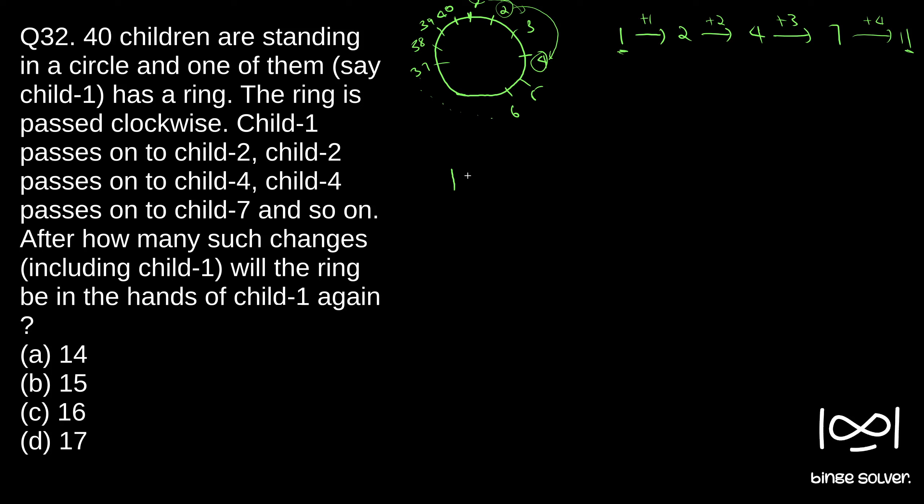So in our first pass, 1 is given to 2, so plus 1. In our second pass, 2 will be given to plus 2, 4. Similarly we can write down all the passes, that will be the easier step. 4 to 7. In the fourth pass we have 7.